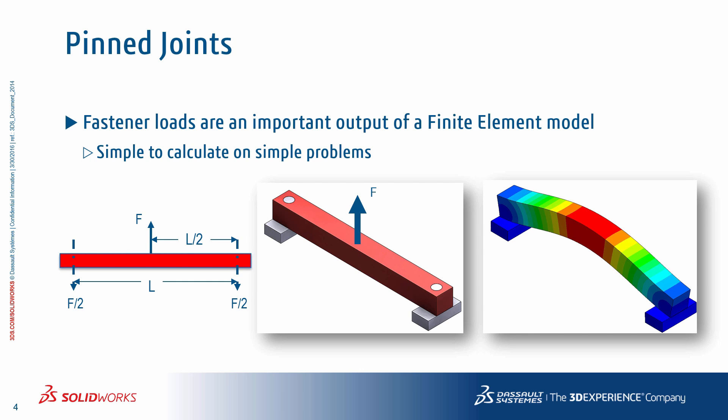In any assembly involving fasteners — whether they be bolts, pins, rivets, or even more complex joining methods such as welds — understanding the load and the load paths is really important to ensure proper sizing for joint performance and reliability. In simple systems, a designer can often estimate these loads in bending, axial, and shear using free body diagrams and hand calculations. However, as the systems become more complex, the load paths become redundant and estimating fastener loads becomes nearly impossible without tools like Solidworks Simulation that can evaluate an entire elastic system.